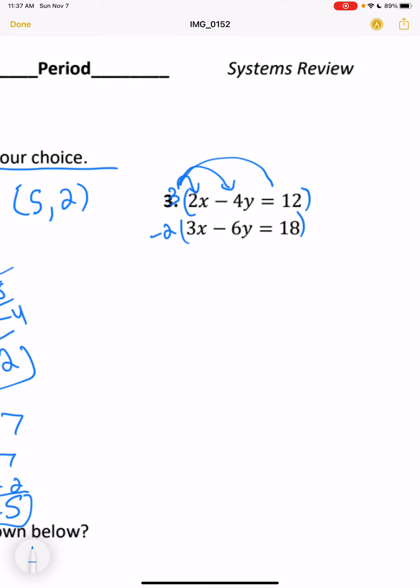So we'll multiply the top by 3. And the bottom by negative 2. Just be careful with how you set that up.